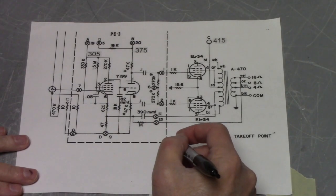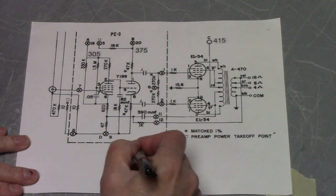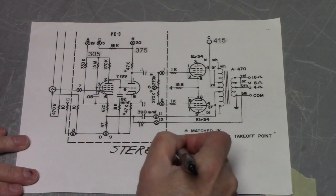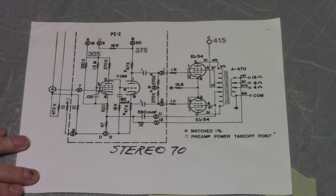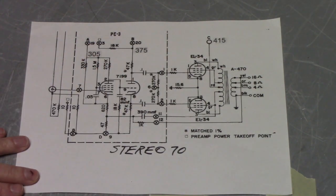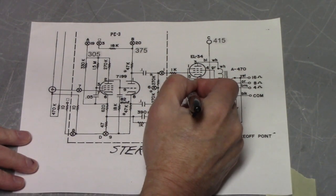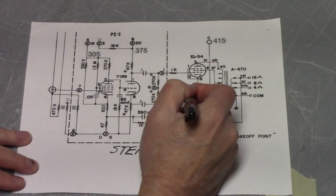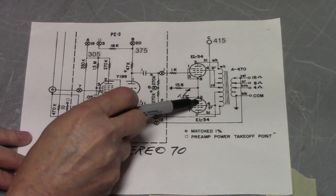You may recognize this schematic. This is the classic DynaCo Stereo 70. And here we're looking at one channel and concentrating on the output stage that uses a pair of EL34 power tubes. And what we're going to do is calculate the quiescent power, that is, how much power does the output stage take with no signal? Well, one very famous voltage here is that we've got 1.56 volts right there across the resistor that joins the two cathodes.